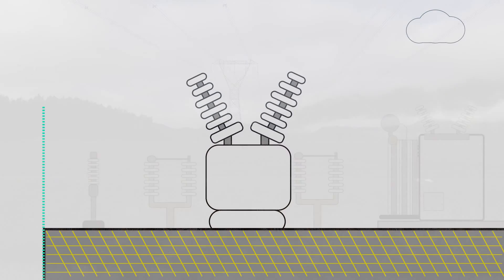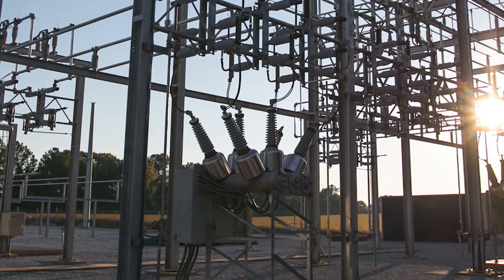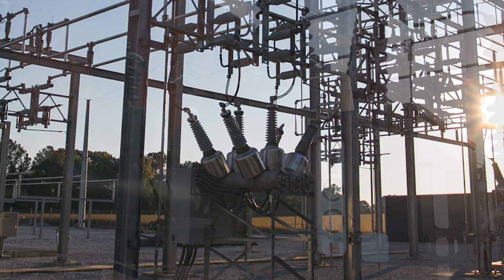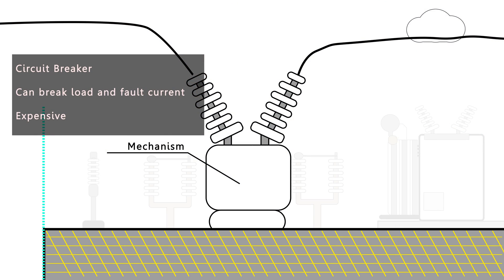Now we move on to the circuit breaker. As I mentioned before, the circuit breaker has the important and difficult job of breaking load current and fault current. And this is really difficult. So circuit breakers tend to be more complex in construction and therefore more expensive, but they play such a crucial role in the protection system of the substation.